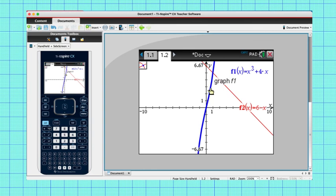Click on your first graph. Now click on your second graph and any points of intersection will be shown. So our only point of intersection is the point 1, 5.